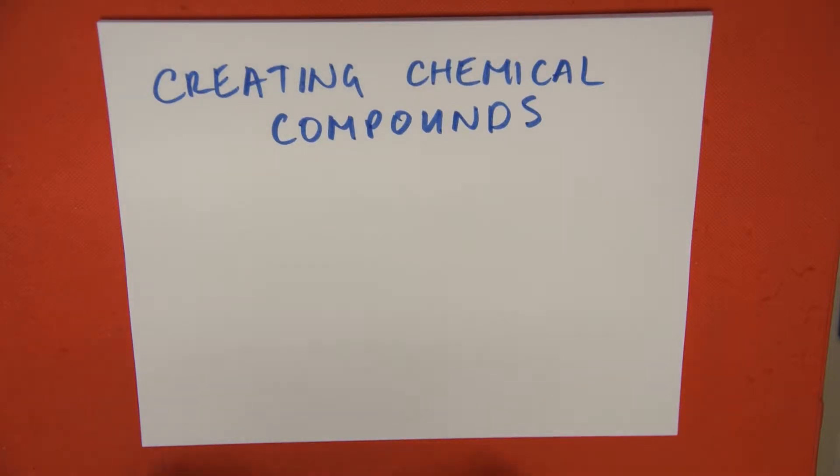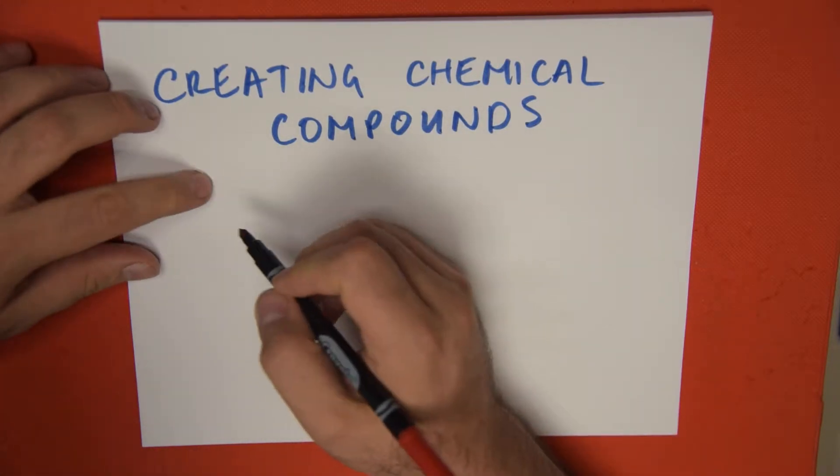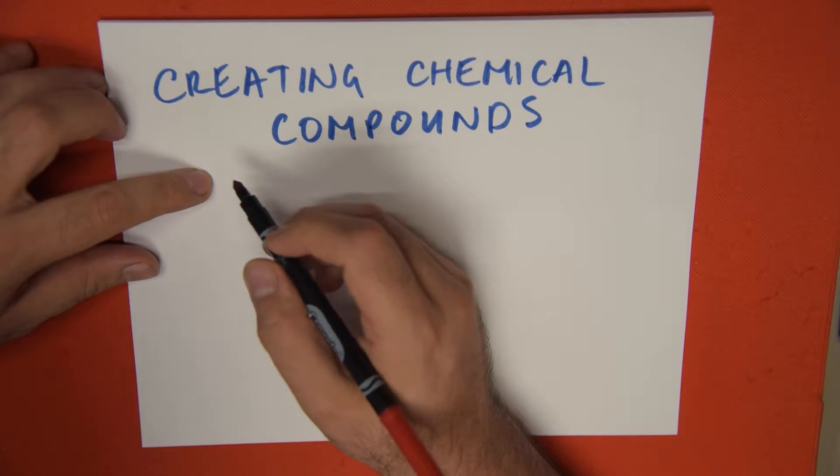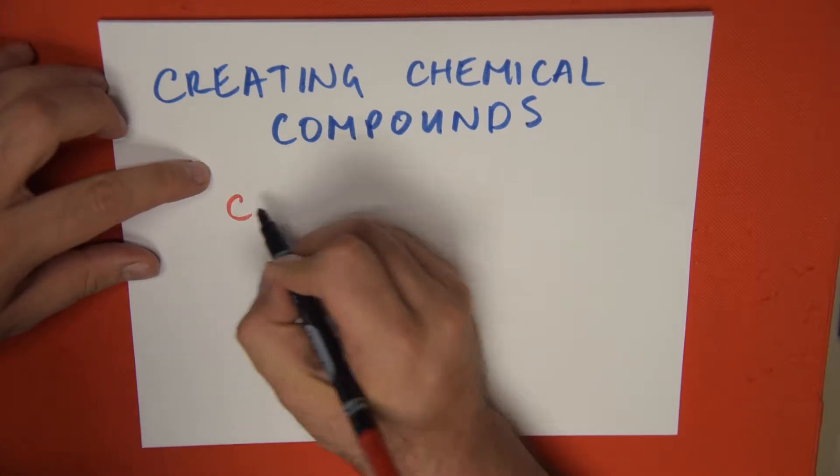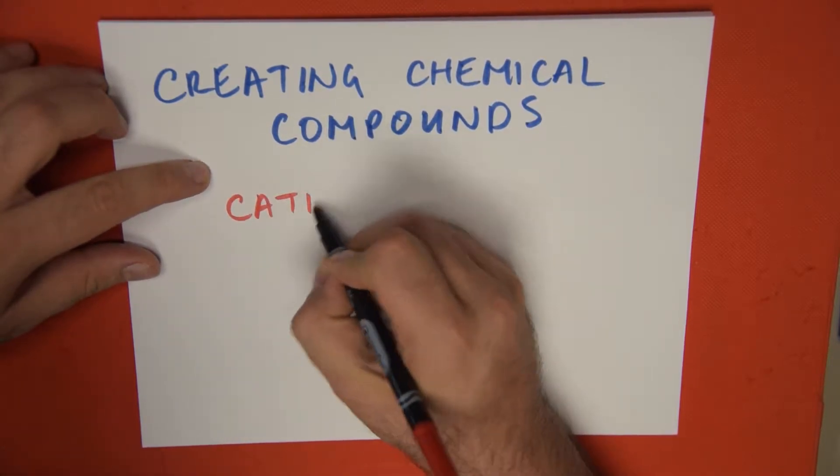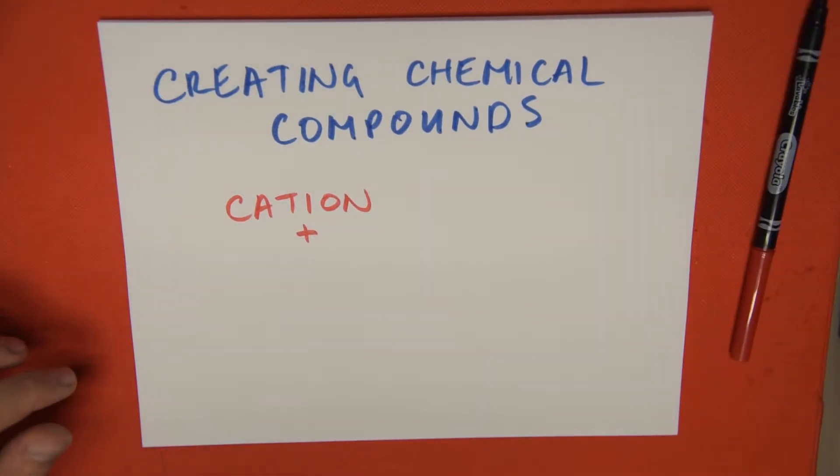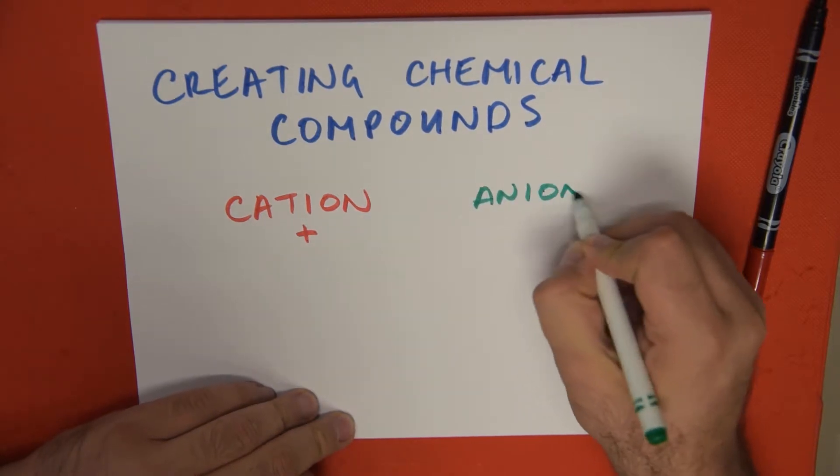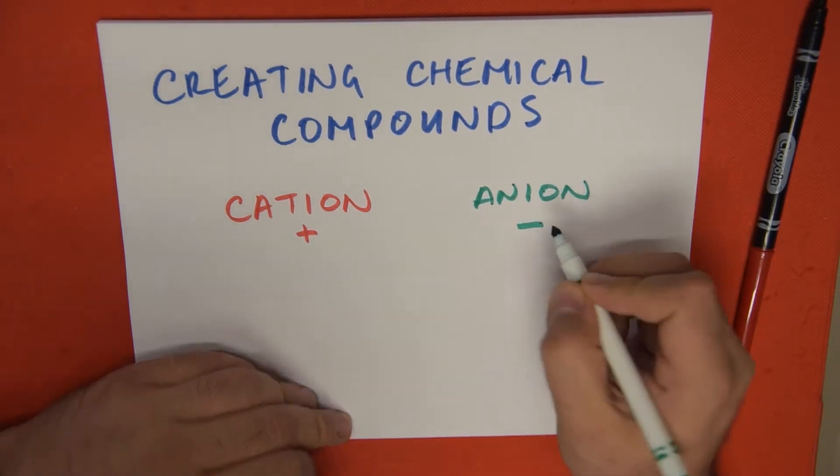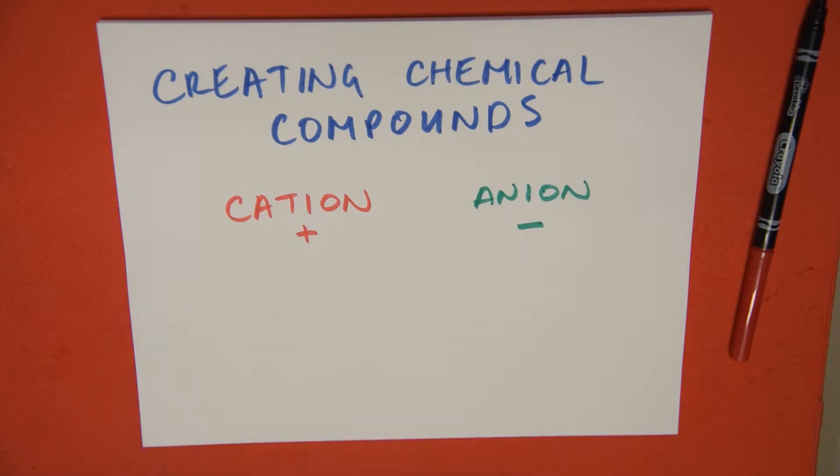On today's video, we're going to be speaking about creating chemical compounds. As you may remember from different classes, compounds in inorganic chemistry are created essentially with two pieces: a cation, which represents a positive part that donates its electrons, and an anion, which is basically the opposite, or the part that accepts electrons.